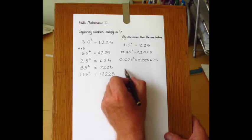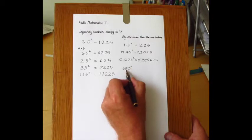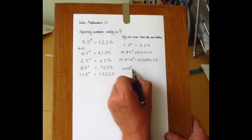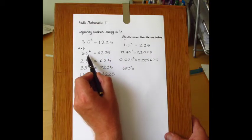Likewise, we can square numbers effectively ending in 5 but with some zeros on the end, like 650 squared. We'll treat it exactly the same as 65 squared.